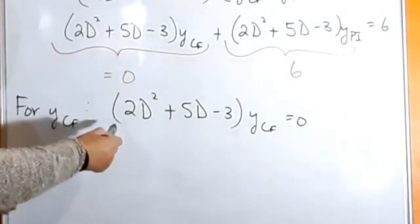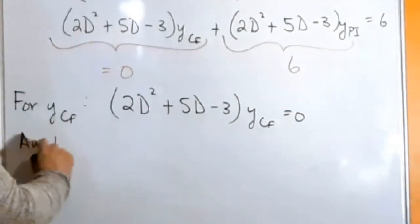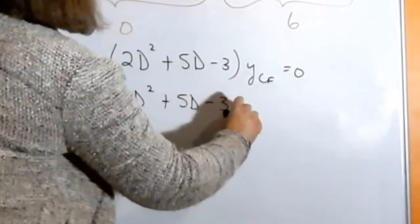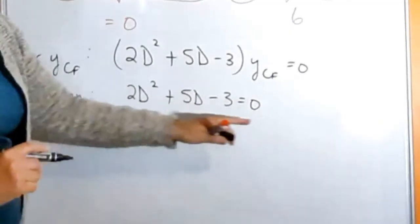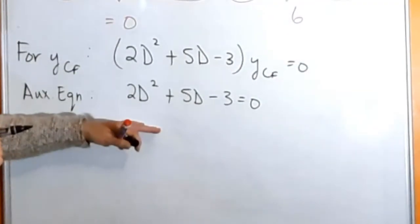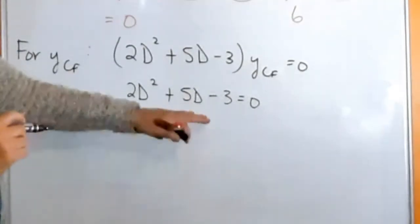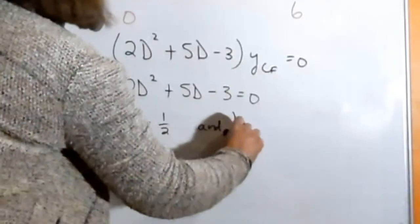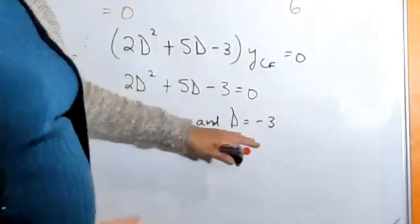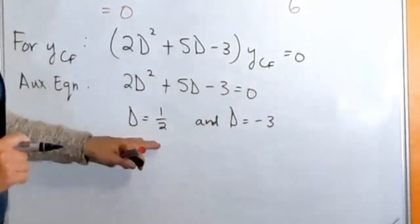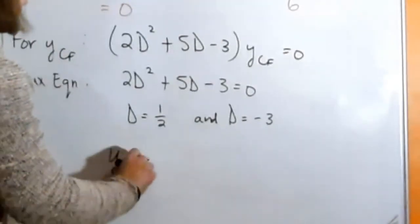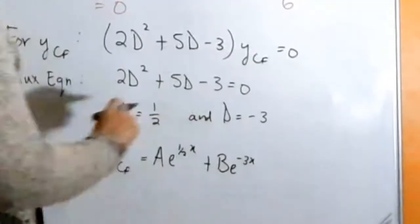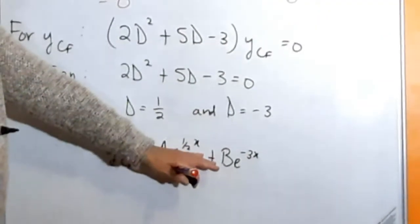The expression in the bracket is your auxiliary equation, so we write that out. From the homogeneous solutions, the roots of this equation give you your complementary function. You can work out that the roots are d equals one half and d equals minus three — these are real and different roots, so your complementary function has that solution form.